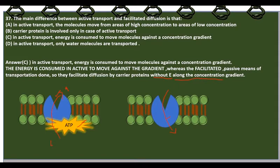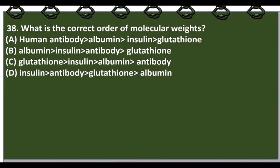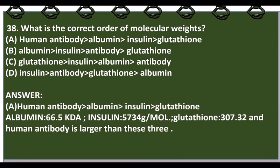What is the correct order of molecular weight? The answer is: human antibody is the biggest, bigger than albumin (66.5 kilodaltons), albumin is bigger than insulin (5,734 g/mol), and insulin is bigger than glutathione (307.32 g/mol). So option A is correct.